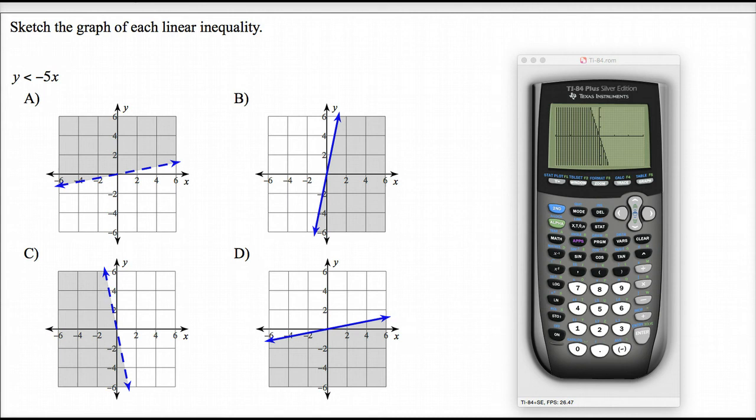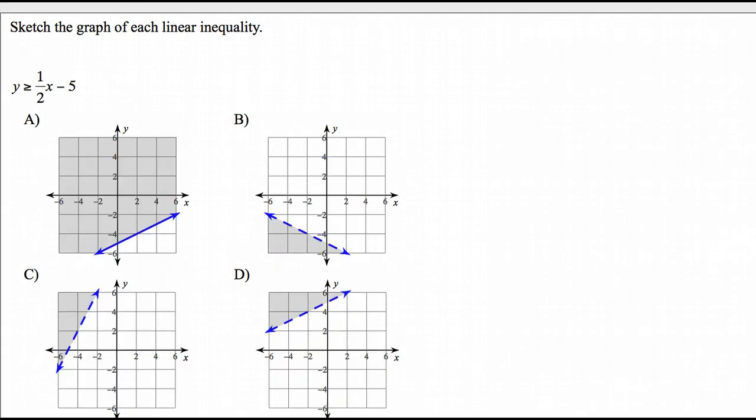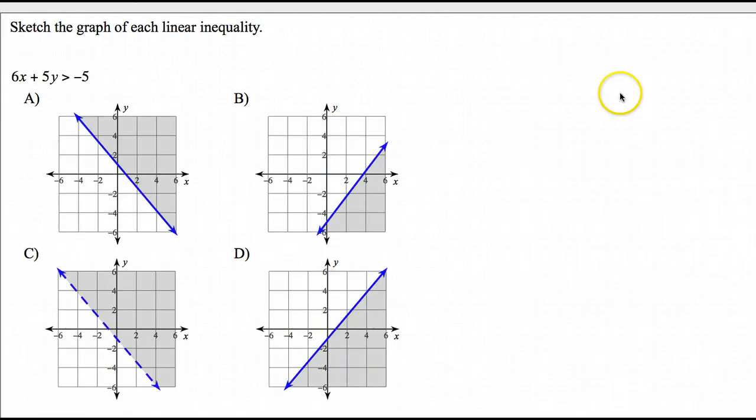Well, what happens if it's not like this? What if it's in standard form or some other annoying thing? Well, here's some annoying thing. So before I can start making any decisions about anything other than, you know, dotted versus solid, which I can do right now, it's a dotted line. That won't change. But whether it's greater than or less than depends on what happens when I work this out. So I need to work this out first.